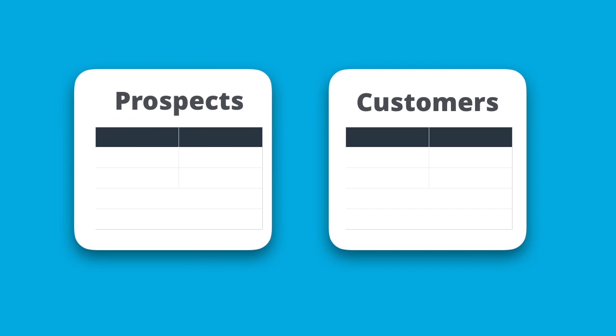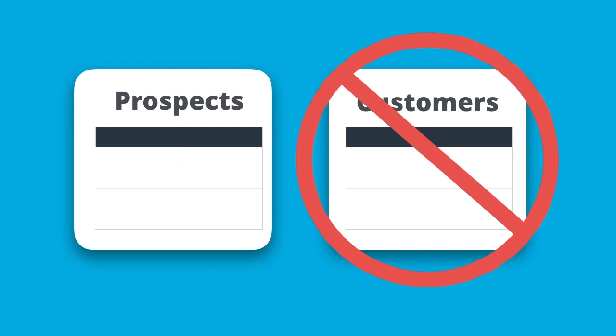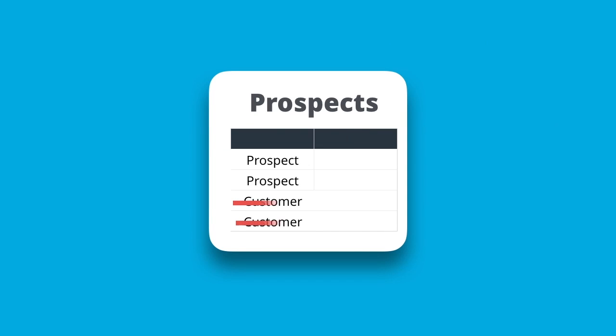Imagine we have two data sets. One is a list of existing customers, and the second is a list of prospects that you bought from a company. We want to reach out to the prospects to turn them into customers, but we don't want to contact people who are already our customers. The problem in this scenario is that we need to eliminate our existing customers from the prospects list.